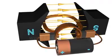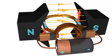When the current flows through the coil, an electromagnetic force is induced on it according to the Lorentz law, so the coil will start to rotate.